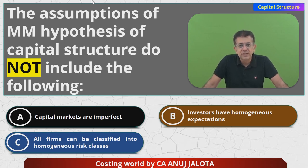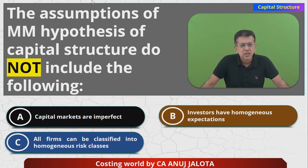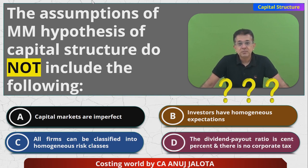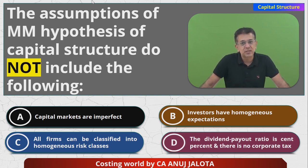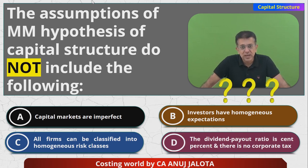Similar kind of risk — whether it is operating risk or financial risk. Risk means leverage, as you've done in chapter six. That was one of the assumptions. So one hint: C cannot be the answer. Option D states the dividend payout ratio is 100% and there is no corporate tax. Kindly comment below if you know the answer.